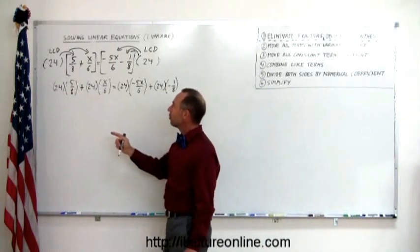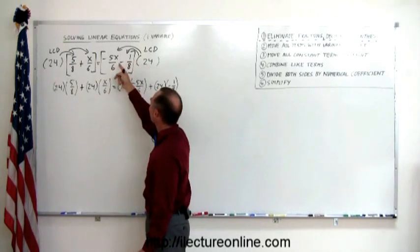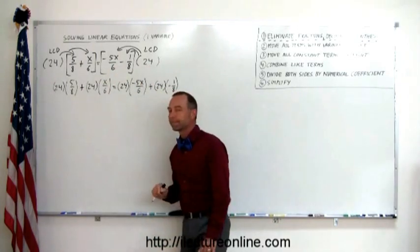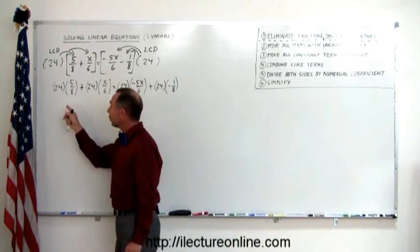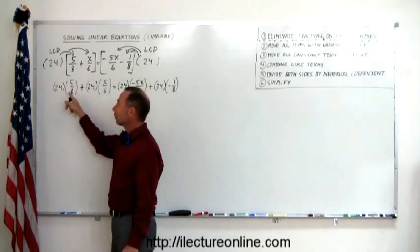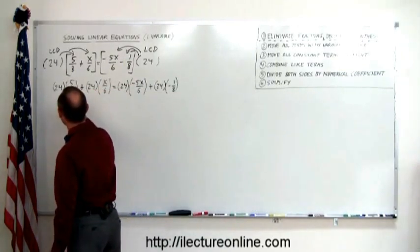So when you do that, you multiply the 24 times each of those terms inside, multiply the 24 times each of those terms inside. Now the next step is we're going to simplify each of those multiplications. Notice that 8 goes into 24 three times. So 24 divided by 8 is 3. So this becomes 3 times 5.